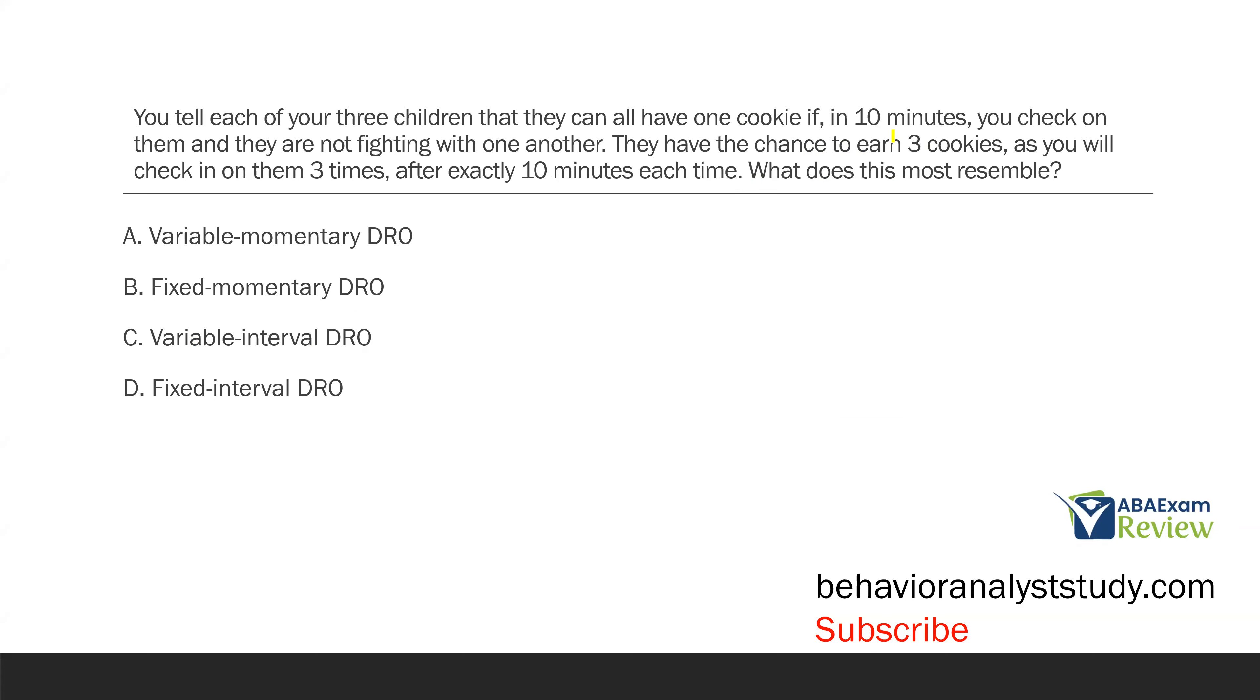You tell each of your three children that they can all have one cookie if, in 10 minutes, you check on them and they are not fighting with one another. They have the chance to earn three cookies as you will check in on them three times after exactly 10 minutes each time. What does this most resemble? Think about this. What does this most resemble? You are saying to your children, they can have a cookie if you check on them and they are not fighting with one another. So, you are going to reinforce in the absence of a behavior. What differential reinforcement procedure reinforces when a behavior is not occurring? A DRO. DRO, we pick a target behavior. If it's not occurring, we reinforce. Now, it doesn't help us much because A, B, C, and D are all DROs. So, let's continue.